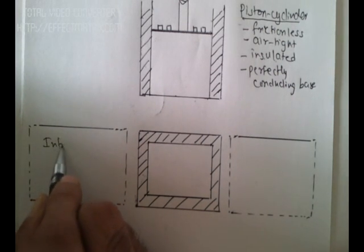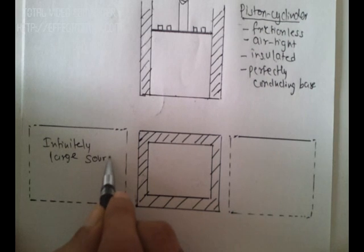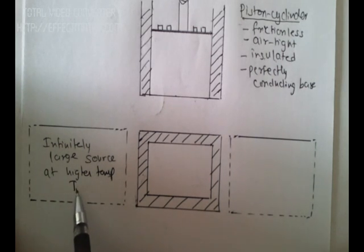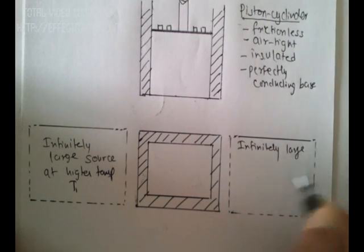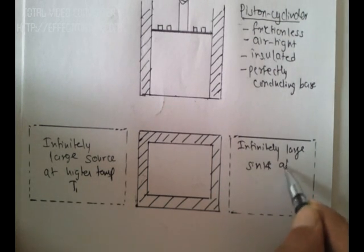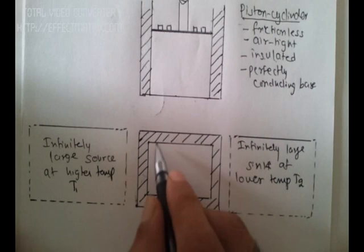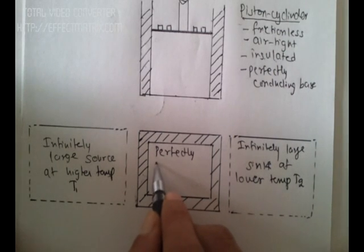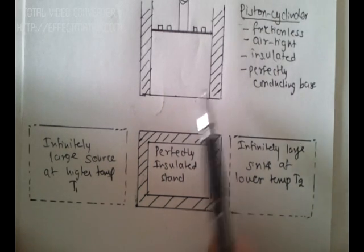He proposed an infinitely large source at higher temperature T1, an infinitely large sink at lower temperature T2, and a perfectly insulated stand. So this stand gives perfect insulation so there will be no heat losses. These were the four parts that he proposed.